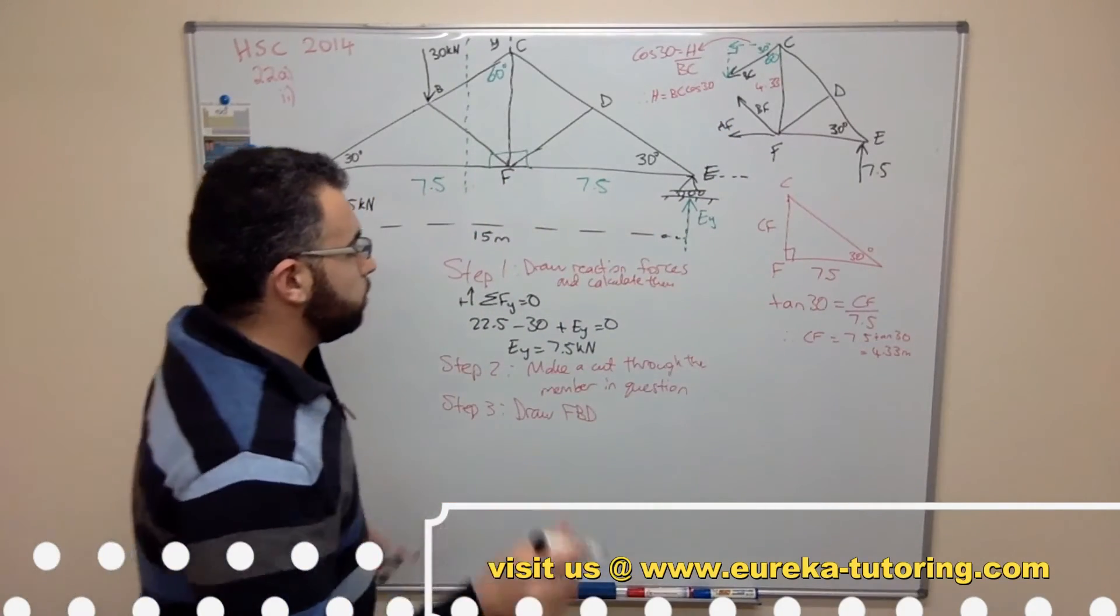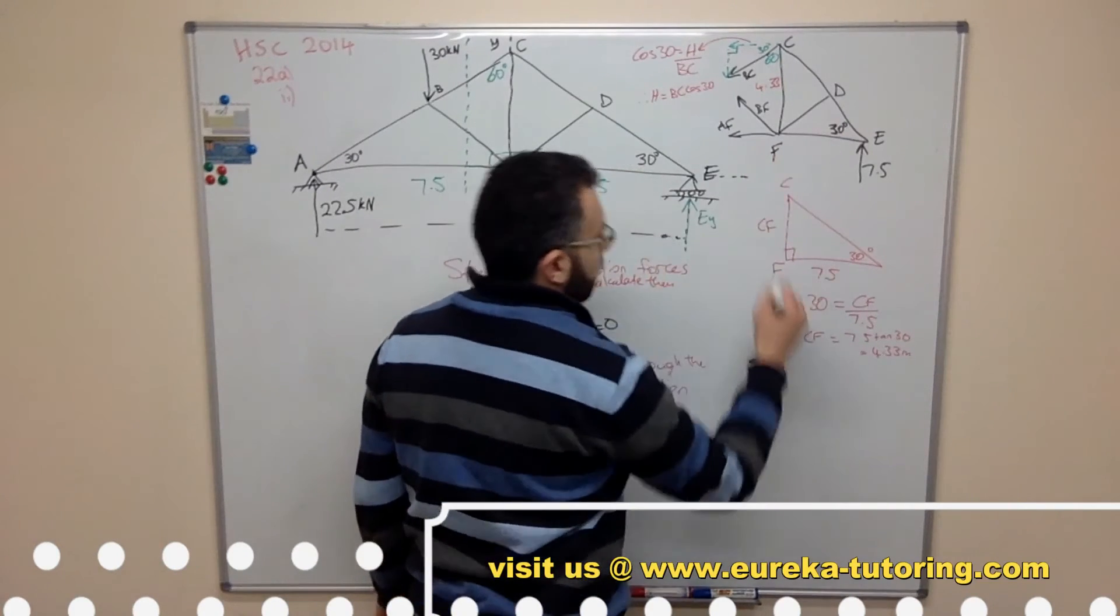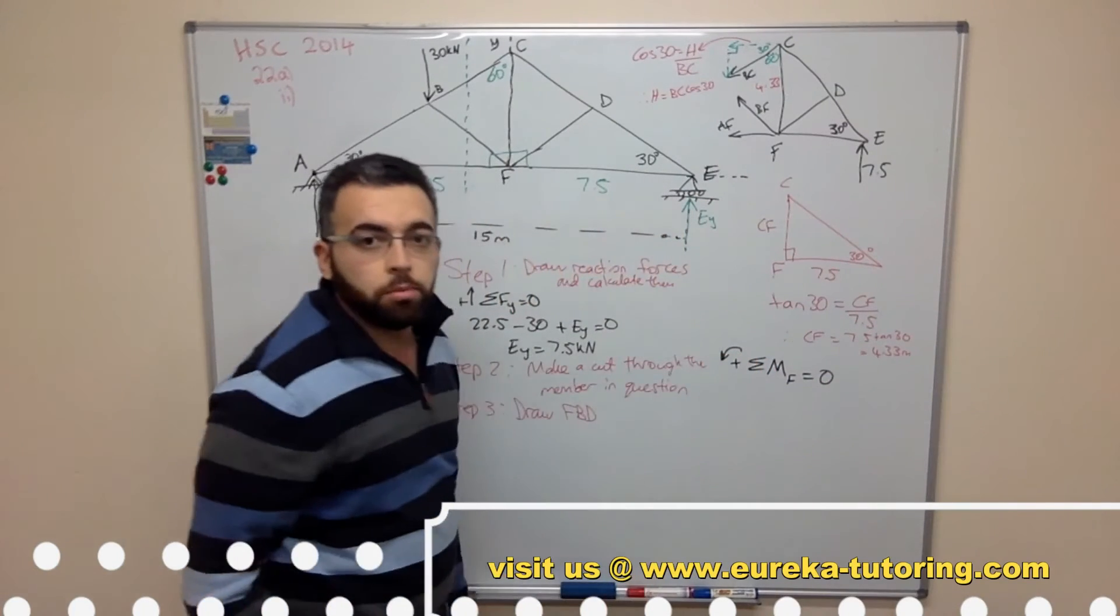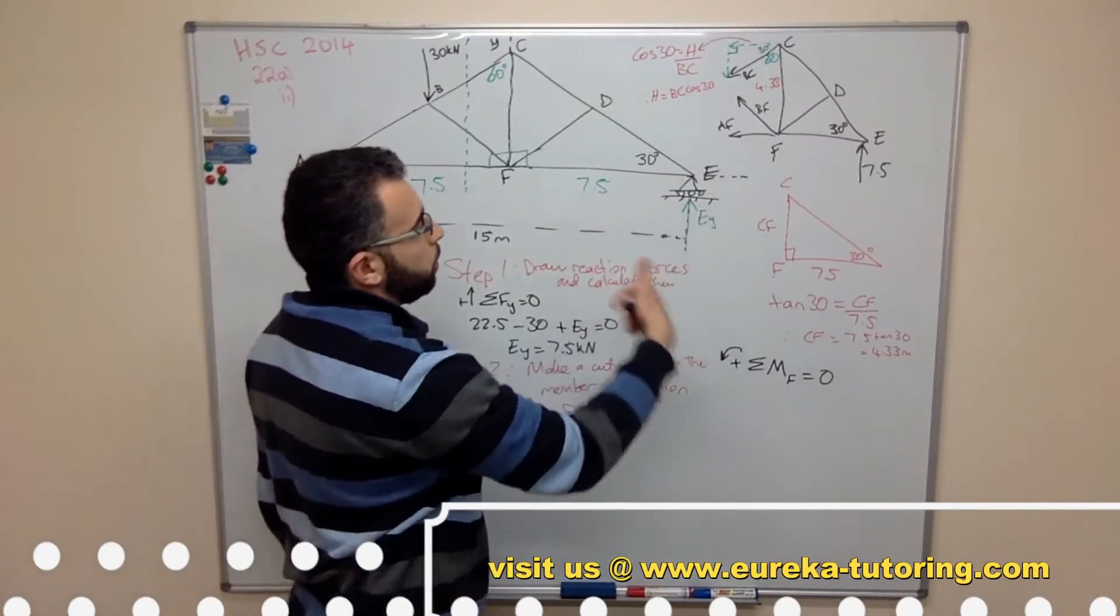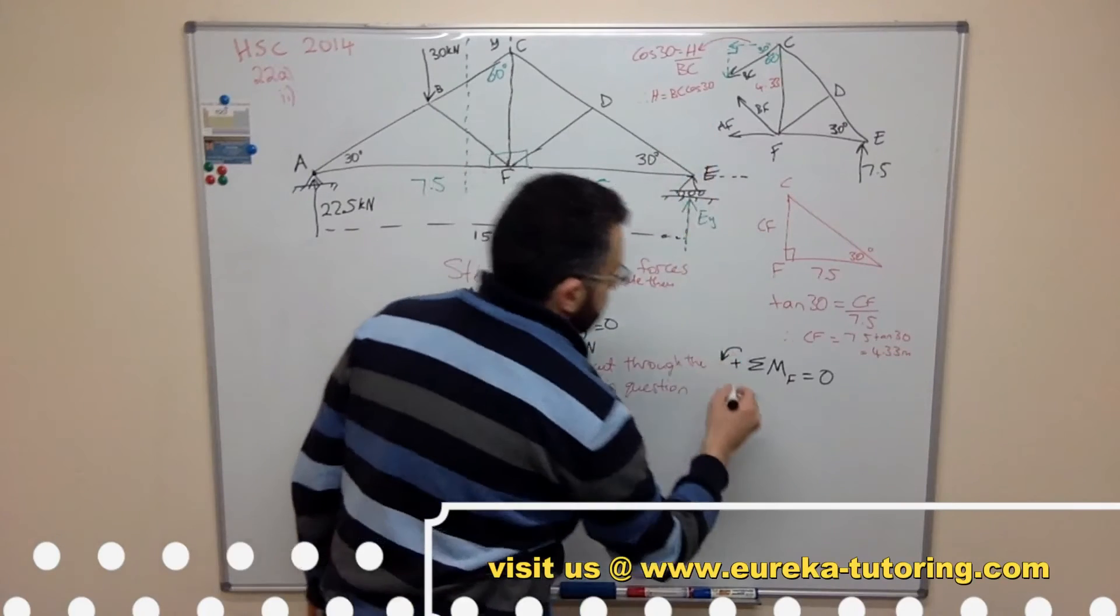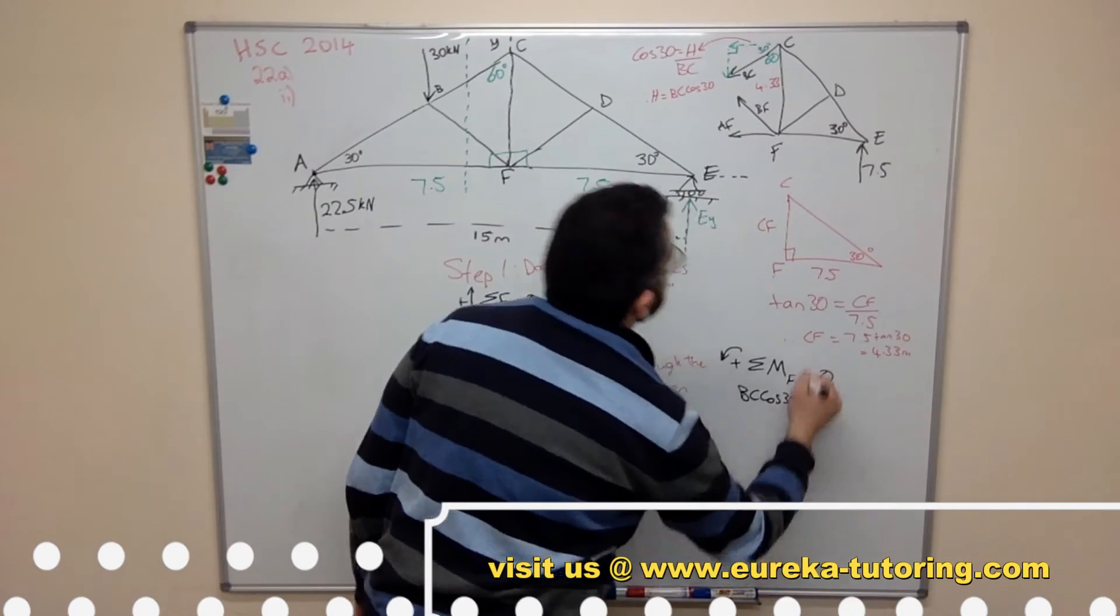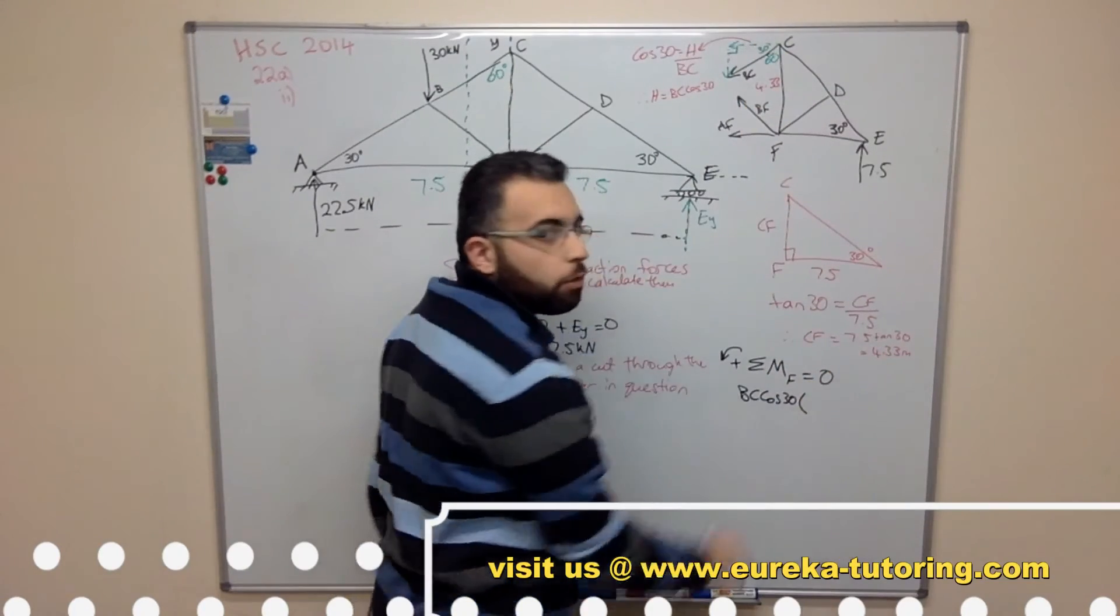So now we'll use the formula. So sum of moments at point F equals zero, and I consider anticlockwise to be in my positive direction. So BC will create a force going this way in the anticlockwise direction, so it will be BC cos 30.